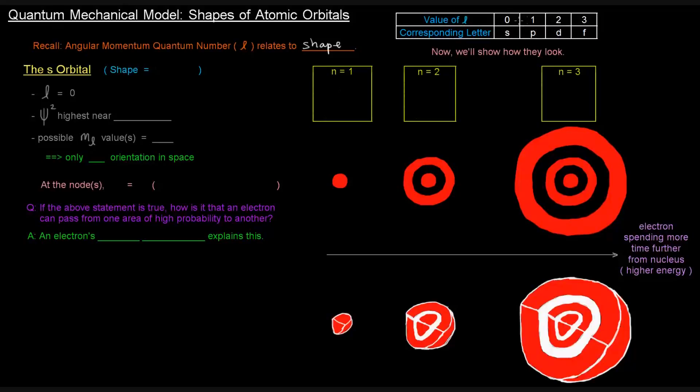So there's an S orbital, P orbital, D orbital, and F orbital. Let's start off with the S orbital. The S orbital, its shape is spherical. That's actually shown over here. Its L value is equal to zero and it's spherical.